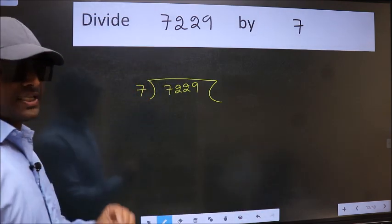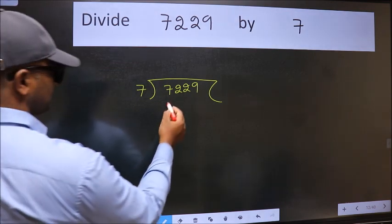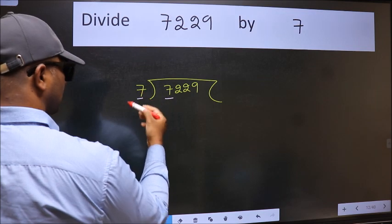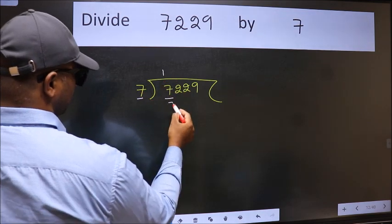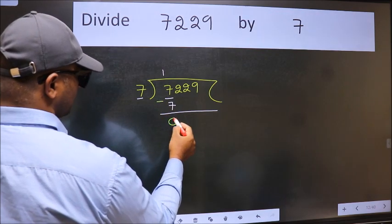This is your step 1. Next, here we have 7 and here 7. When do we get 7 in the 7 table? 7 once is 7. Now we should subtract. We get 0.